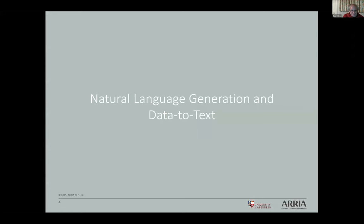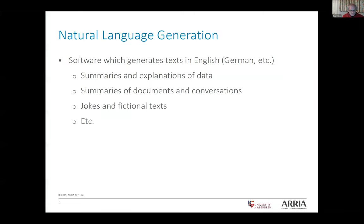The first question: I said I do natural language generation and data-to-text — what is that? Natural language generation is software which produces language. You produce text in English, German, Chinese, whatever. It might be summaries and explanations of data, summaries of conversations and documents, or even jokes and novels. There's quite a variety of different things that fall under the umbrella of NLG.